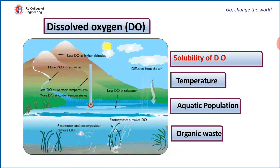When temperature increases, dissolved oxygen content decreases and vice versa. More the aquatic population, lesser will be the dissolved oxygen. More the organic waste, lesser will be the dissolved oxygen.